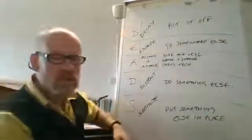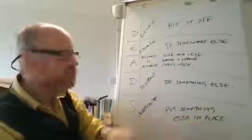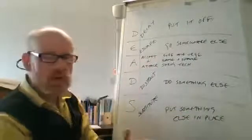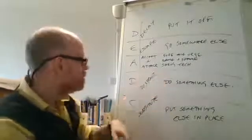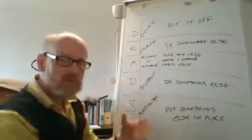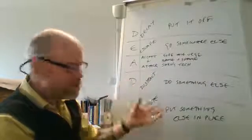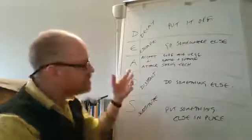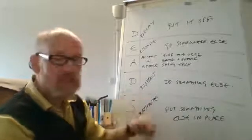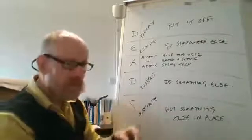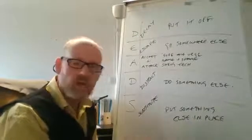So this is the list of things we can do. We've got those cravings going on. First of all, we can try and delay, put it off, see if we can get through the wave of that urge. We can escape, go somewhere else, get away from those triggers. We can attack our urge: surf the urge, name and shame, the shrug technique. We can distract ourselves by doing something else. And we can put something else in place. First time you try this, probably won't work very well because we need to practice this. But if we practice this every time we've got an urge, every time we've got a craving, it gets easier and easier. And after a while, as soon as that urge starts coming on, our brains are instinctively going to be doing this. And hopefully, we can defeat those urges.